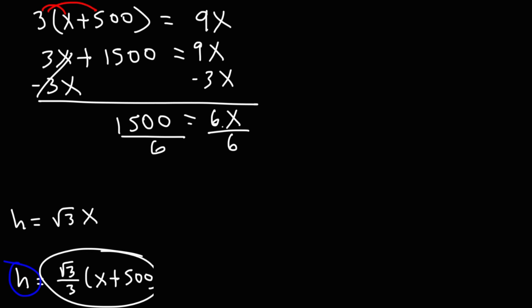So dividing both sides by 6 will help us to get our answer. So 1,500 divided by 6. Let's use a calculator for that. This is equal to 250. So we know what x is. x is equal to 250.